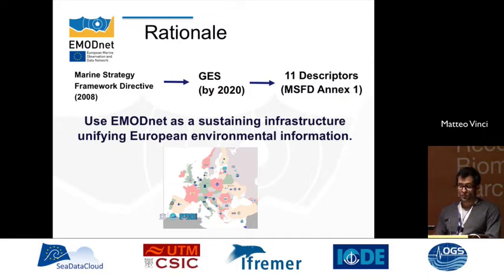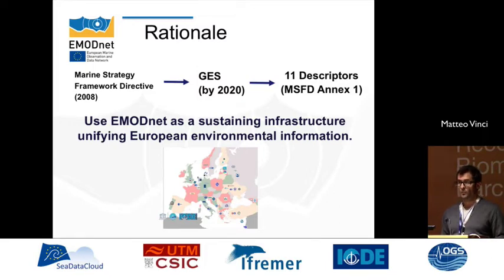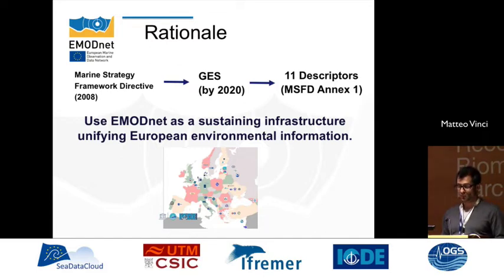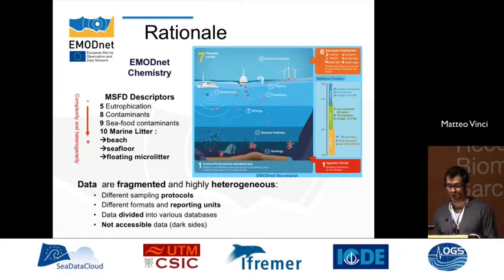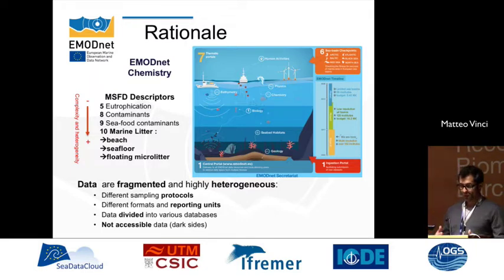Since 2008, the Marine Strategy Framework Directive has been aiming to achieve good environmental status by 2020 for our seas and oceans, described by Annex 1 with 11 qualitative descriptors. Since 2009 there is an ongoing challenge to use EMODnet as a sustaining infrastructure unifying European environmental information. EMODnet is composed of 7 thematic portals coordinated by a central portal, and we specifically are the Chemistry portal.